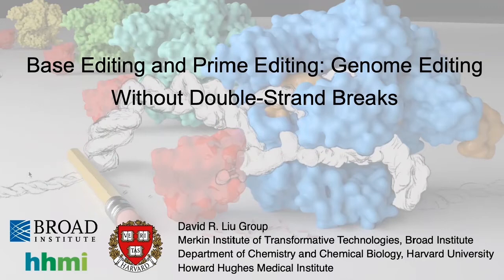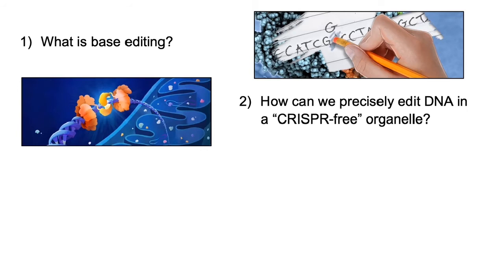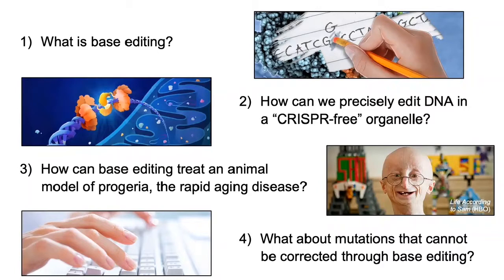I'll begin with a roadmap of four topics I'll cover in this talk. I'll start with an overview of base editing, a general and precise gene editing technology that does not require double-strand DNA breaks. Then I'll describe how a new class of base editors has enabled precision gene editing in an important part of the cell that cannot be edited with CRISPR. Third, I'll share newly published work that exemplifies how we can use base editing to treat a serious genetic disease in an animal. And finally, I'll present prime editing, a highly versatile new editing technology that can perform true search and replace gene editing in living systems.